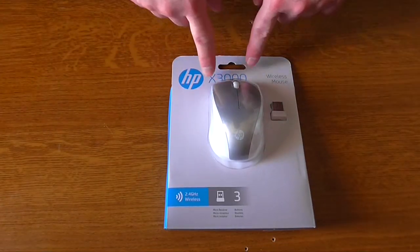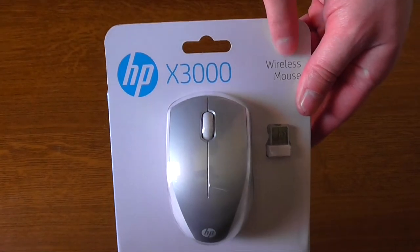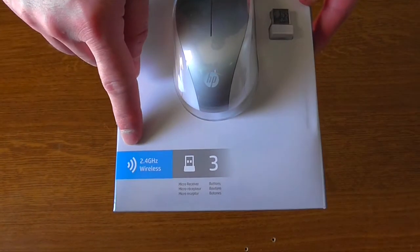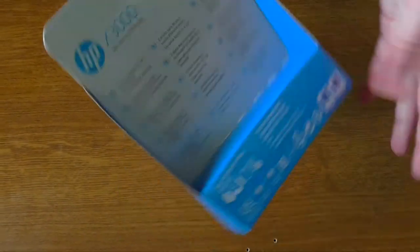Hello YouTube, Dion from Ajax Tech with the unboxing of HP X3000 wireless mouse. This is a three-button mouse that has a 2.4 wireless micro receiver. It is quite small and really fitting for portable devices.